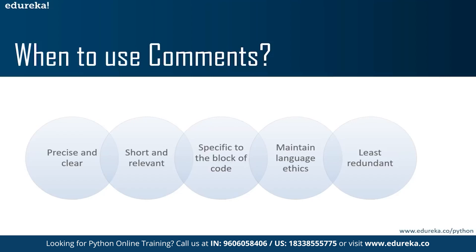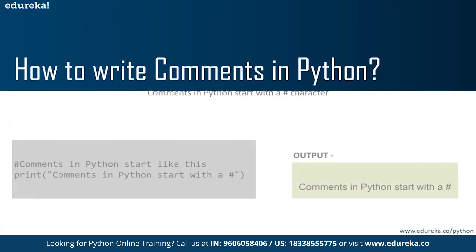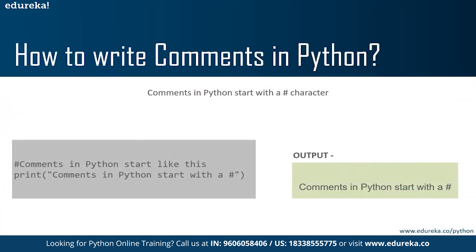Just keep the following points in mind when commenting your code: make sure your comments are very precise, clear, and preferably short. They need to be as specific as possible to the block of code they are included with. Please make sure you use decent language and do not repeat your comments as they become redundant. Comments in Python are preceded by a hash character. As you can see on screen, I have a small example with two lines of code — my first line is a comment and my second line is a print statement.